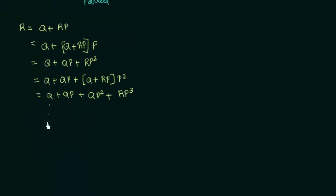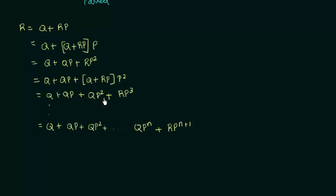If you continue this n number of times, you will get r = q + qp + qp² + ... + qpⁿ + rp^(n+1). Notice that when the second-last term is p², the last term is p³ — that is 2+1=3. So in the same way, if the second-last term is n, the last rp term will be p^(n+1).